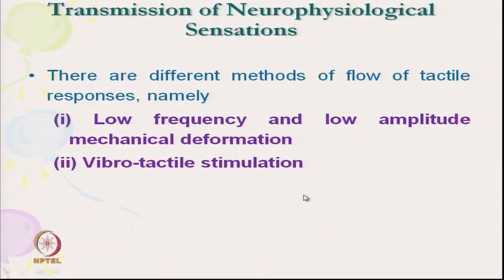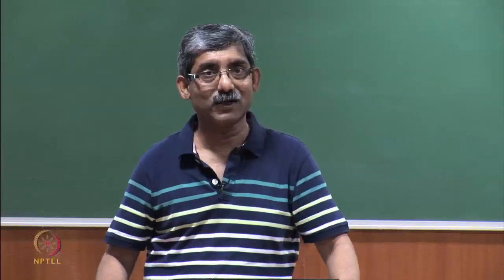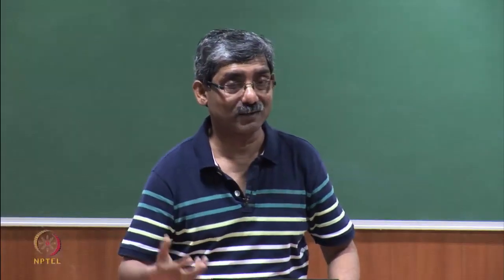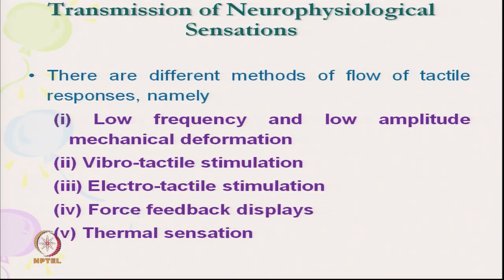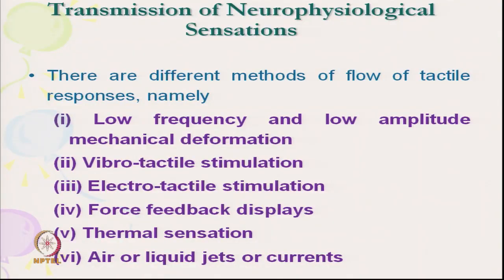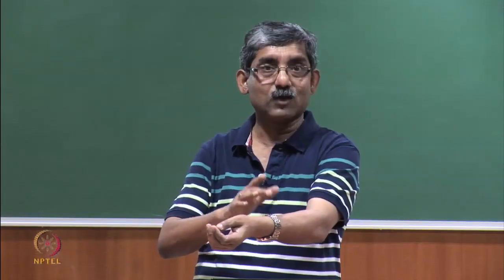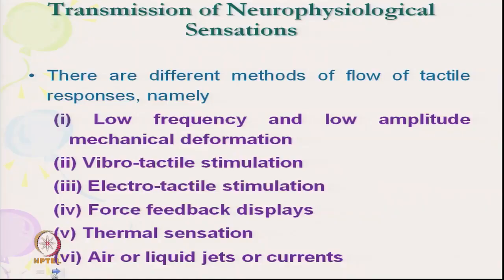There are different methods for tactile signal flow. The tactile receptor gets signal through: low frequency, low amplitude mechanical deformation; vibrotactile stimulation through vibration; electrotactile stimulation through electric current; forced feedback display of kinesthetic type; thermal sensation through heat flow; and through air or liquid jet or current. These are the six different ways we get the flow of tactile sensation to our body.